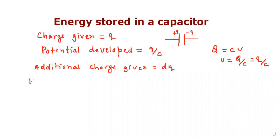So work done will be dw which is v dq. This follows from the fact that w upon q equal to v, or w equal to qv. So dw equal to v dq. We can put the value of v from here, q upon c, so q upon c dq.